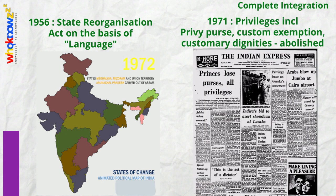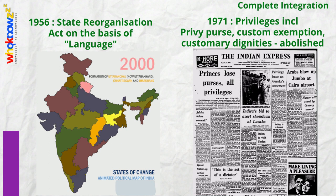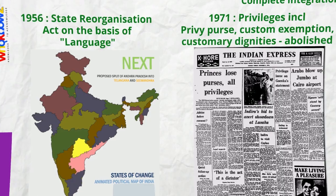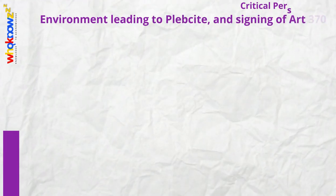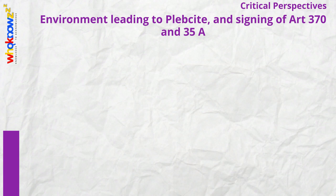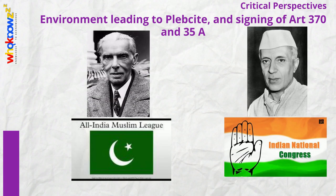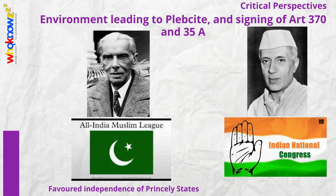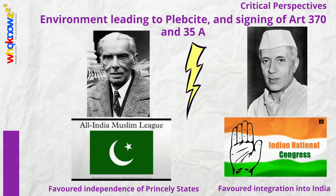The personal privileges of the princes — the privy purse, the exemption from customs duty, and customary dignities — survived only to be abolished in 1971. Let us now see some critical perspectives on the process of integration. The integration process repeatedly brought India and Pakistani leaders into conflict. During negotiations, Jinnah, representing the Muslim League, strongly supported the right of the princely states to remain independent — an attitude which was diametrically opposite to the stance taken by Nehru and the Congress.